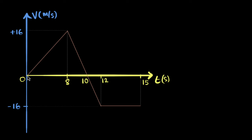So you can imagine the car speeds up, reaches a maximum speed, then slows down and stops. And then you can see the velocity becomes negative. What does negative velocity mean? That means now the car will travel backwards, in reverse, in the opposite direction.